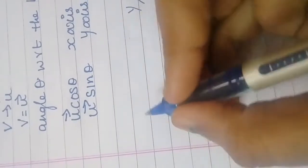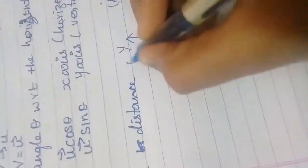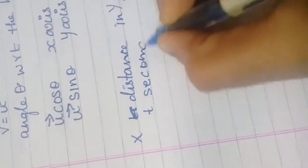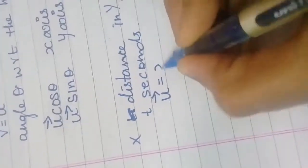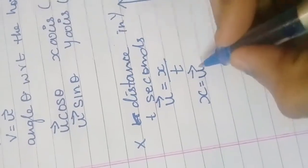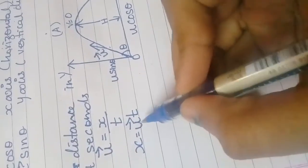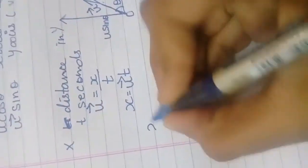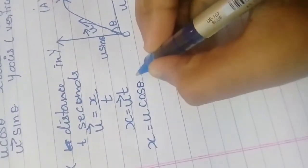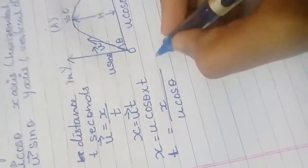Let the particle A travel x distance in t seconds. We know that U vector equals x divided by t, so x equals U times t. Since the particle is moving horizontally, we substitute U cos theta for U along the x-axis. Therefore, x equals U cos theta into t, and for time, t equals x divided by U cos theta. This is equation number 1.